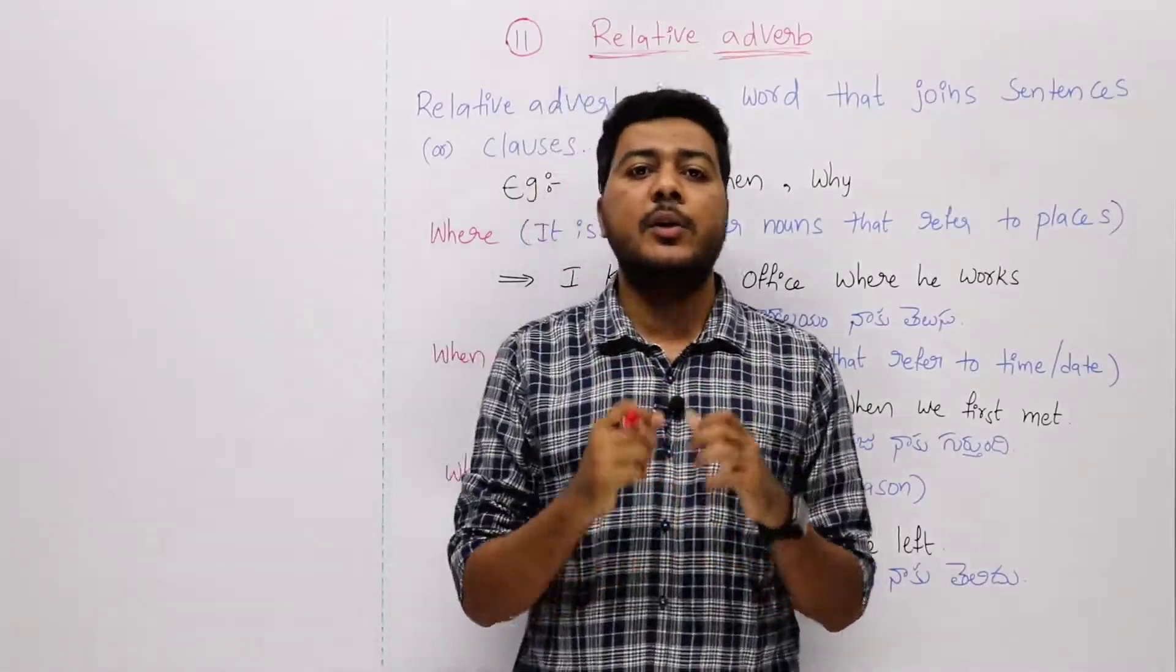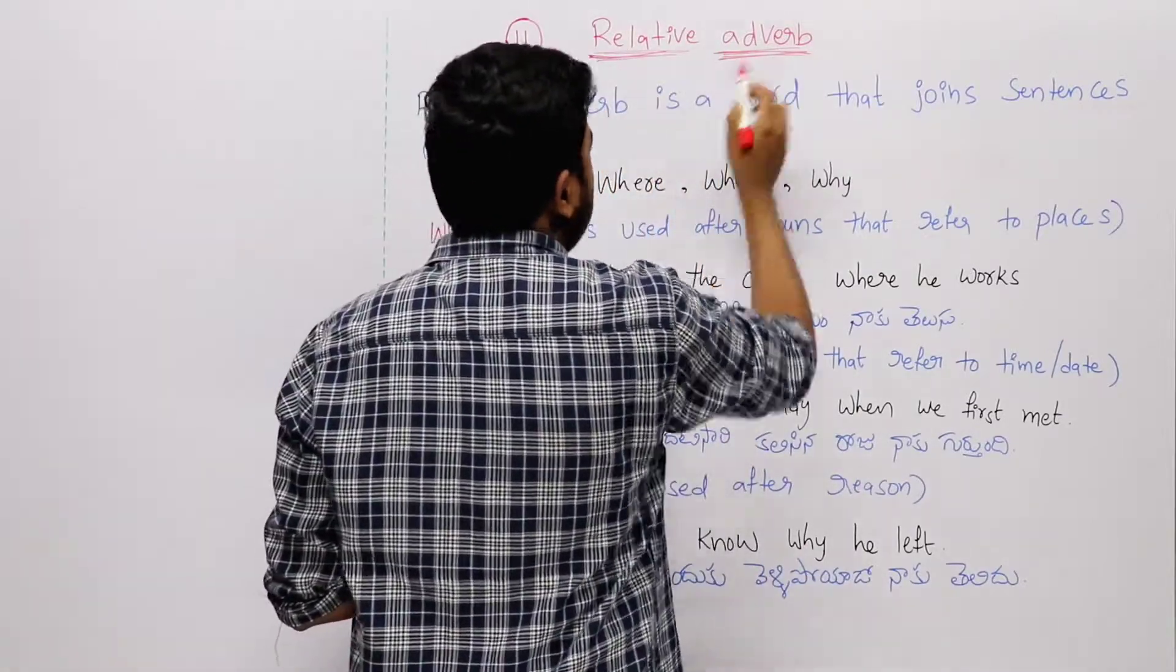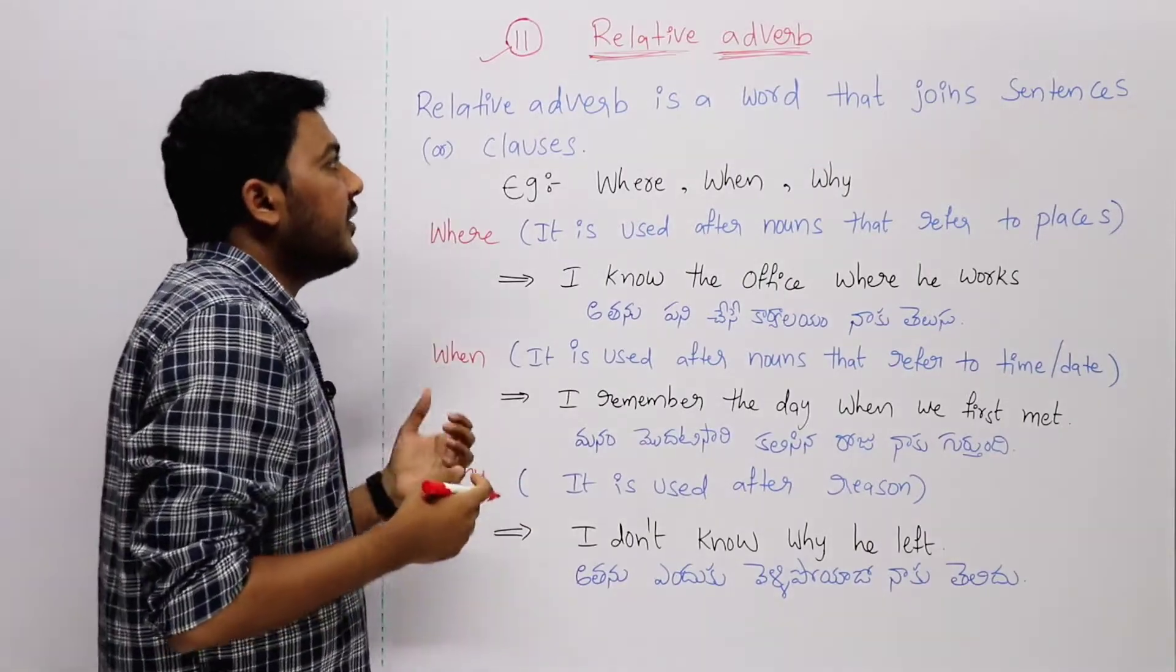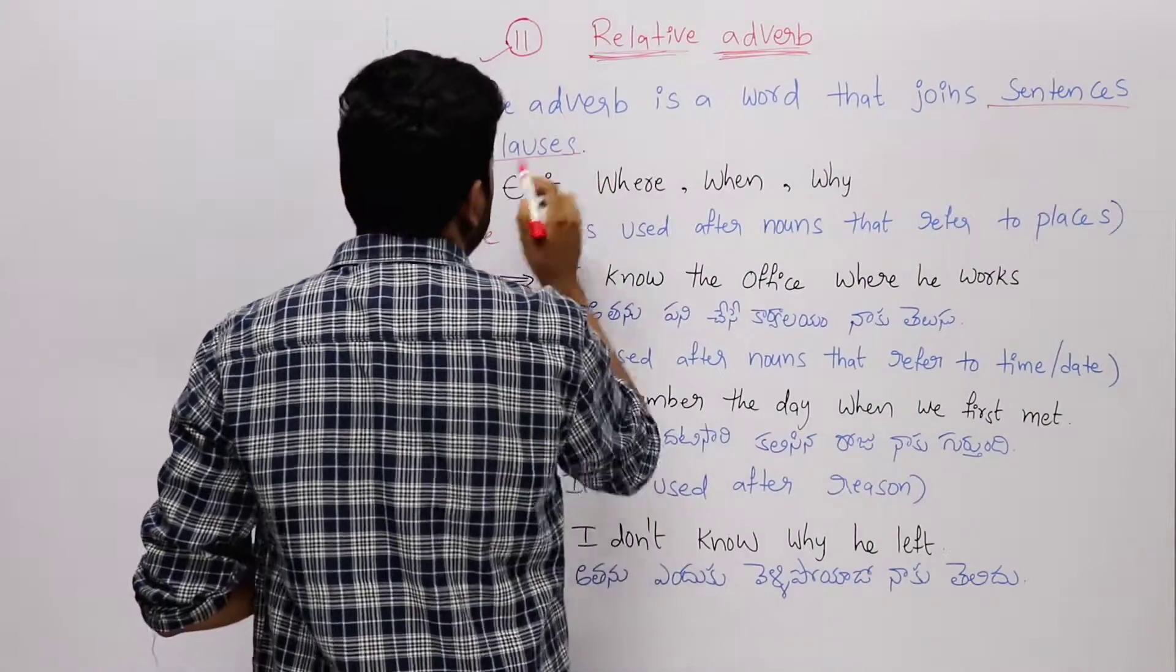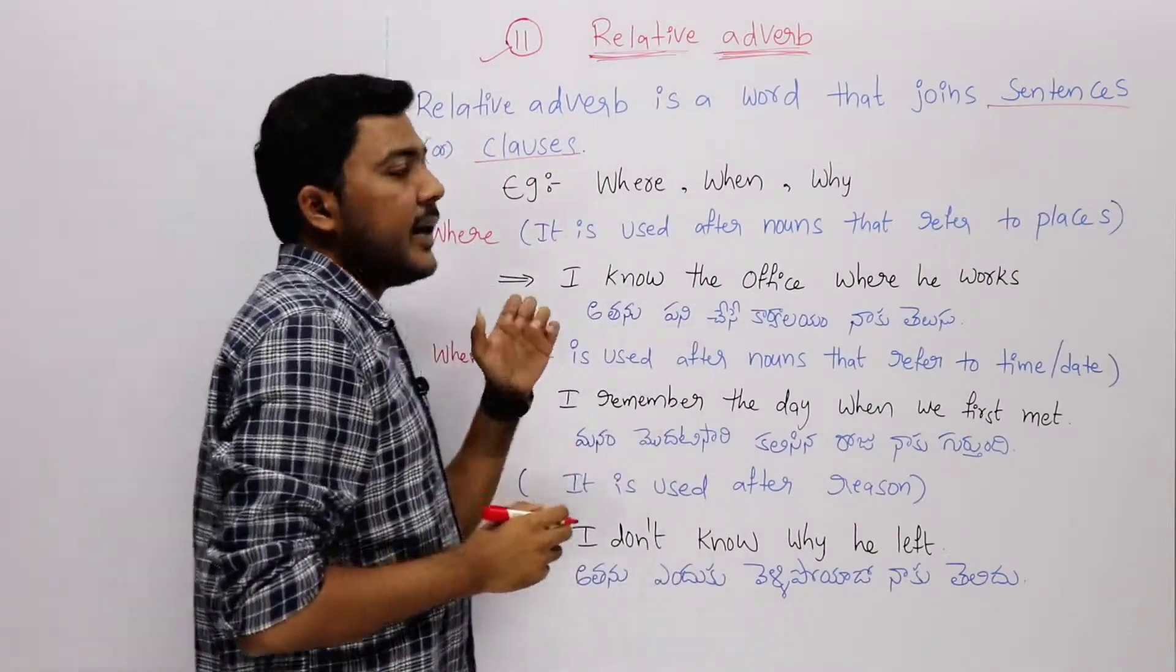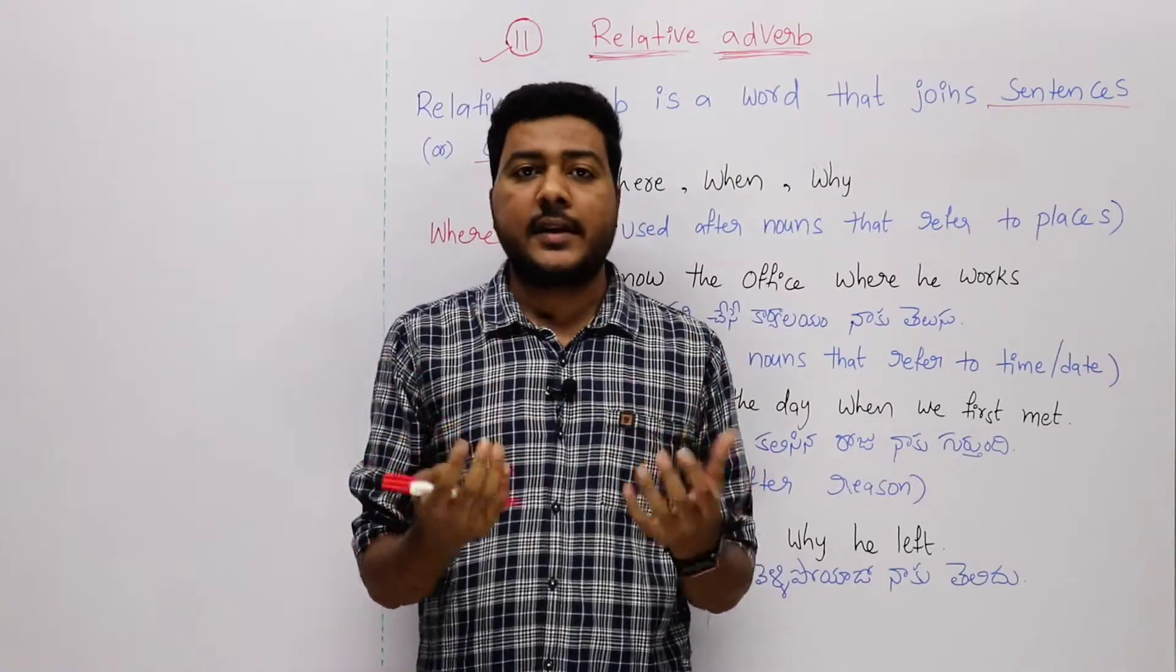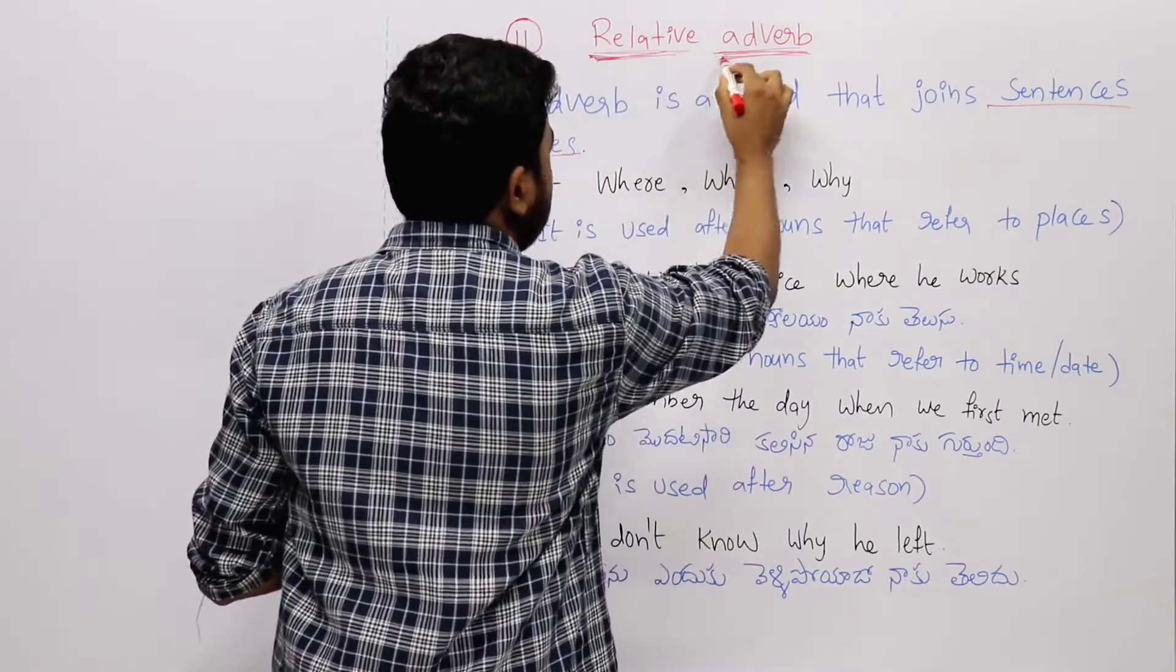Friends, many types of adverb. Next type, 11th type: relative adverb. A relative adverb is a word that joins sentences or clauses. A relative adverb relates two different sentences or two different clauses, joining them together.